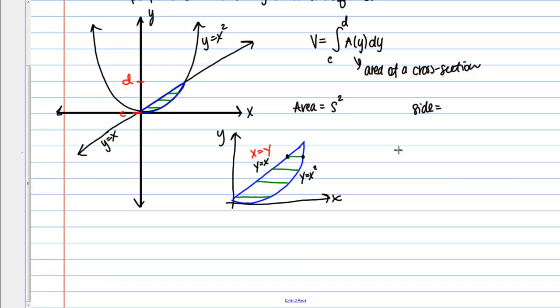But for y equals x squared, I need to actually solve that. So y equals x squared, I can write that as x equals plus or minus the square root of y. So I've got kind of two pieces there, so the question is which piece am I dealing with here?